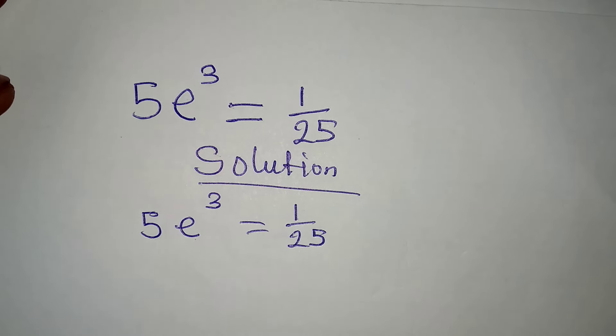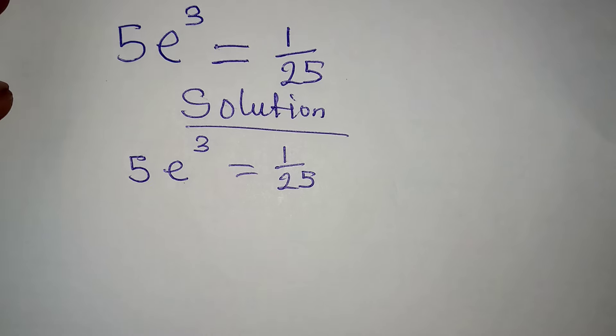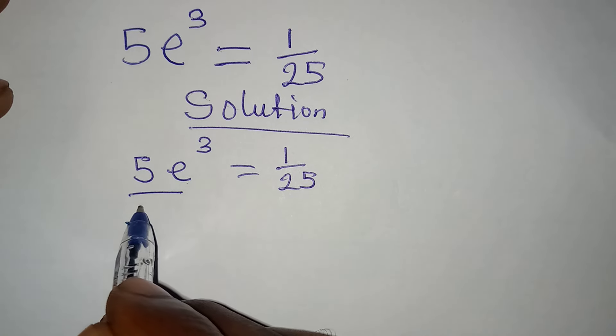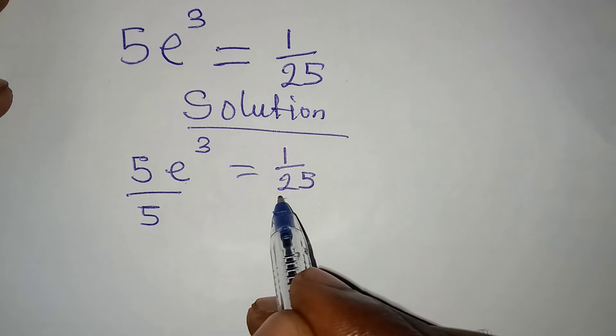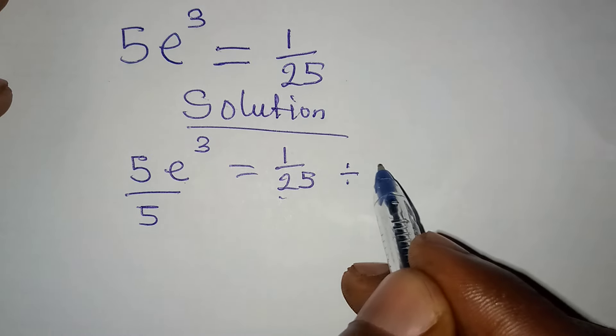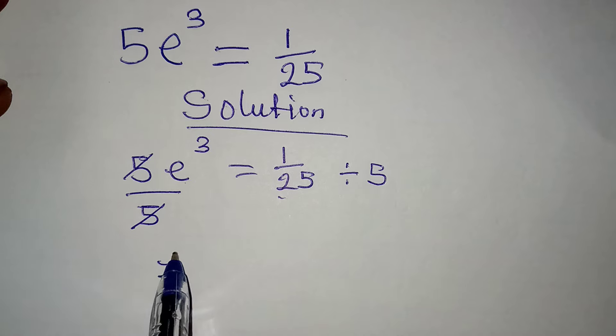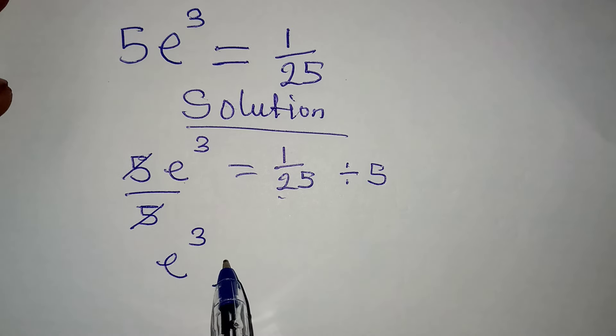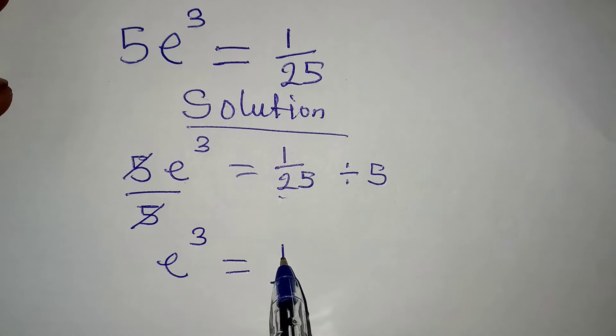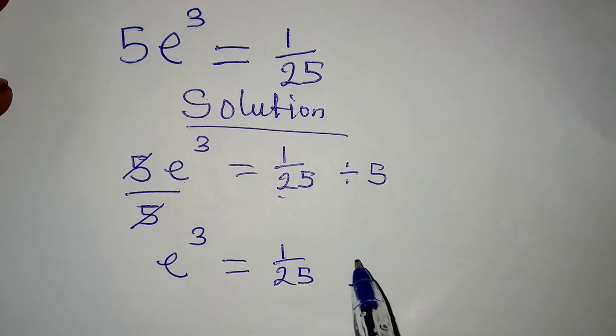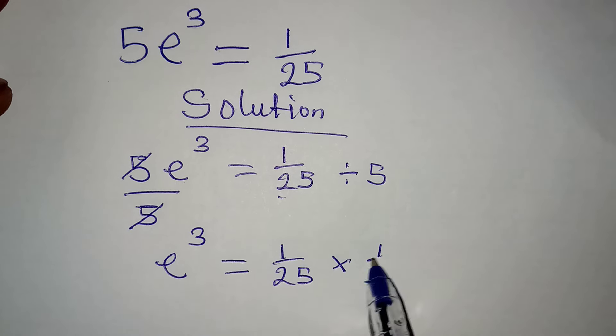Okay, so what is the first step I'm going to take? Divide both sides by 5. And then I'll divide this by 5. This can cancel this. Then I have e to the power of 3 to be equal to 1 over 25 multiplied by 1 over 5.